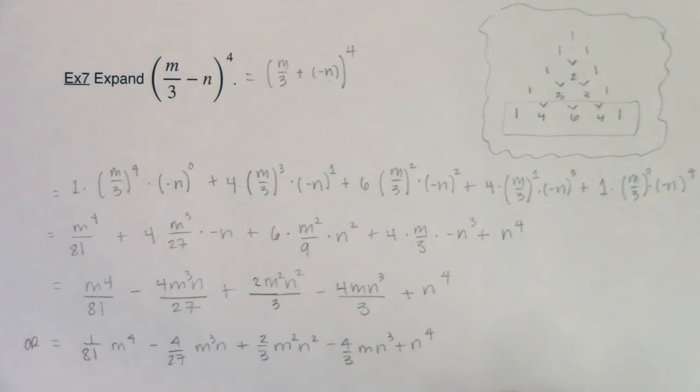All right. So with that, we're going to take a look at not expanding an entire binomial, but finding a specific term in a binomial expansion. That's coming next. And that will be our last example, at least in this chapter. All right, I will see you in a few. Thanks. Bye.